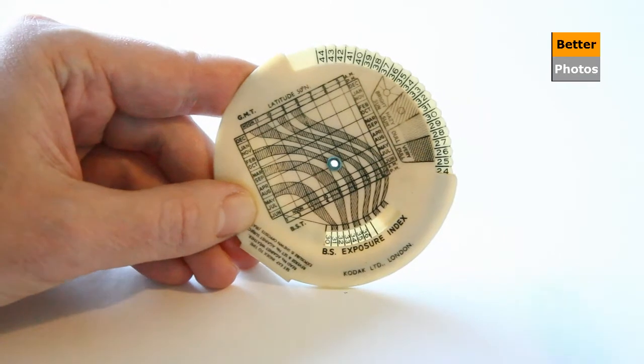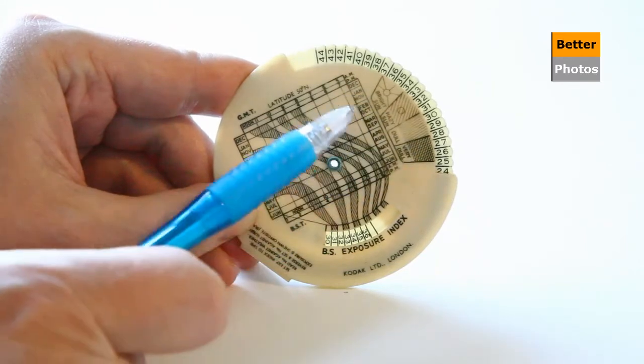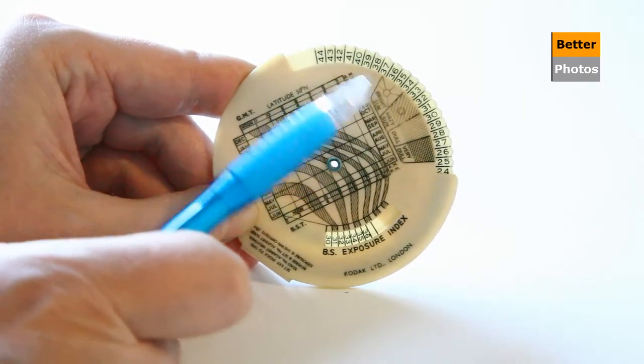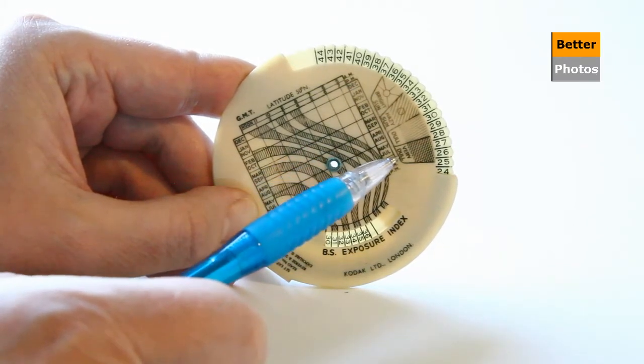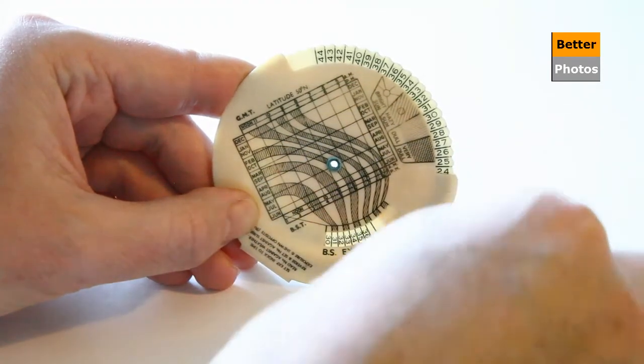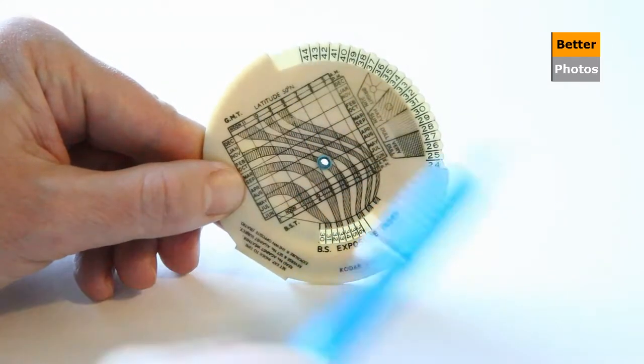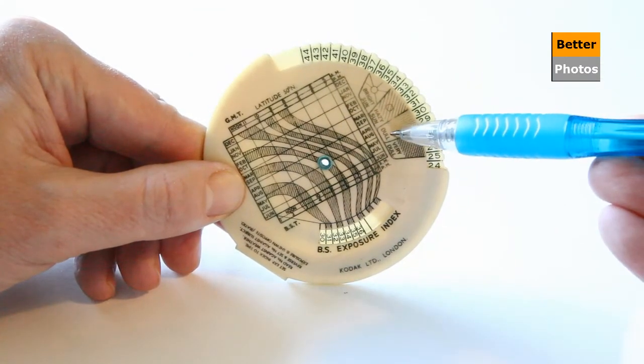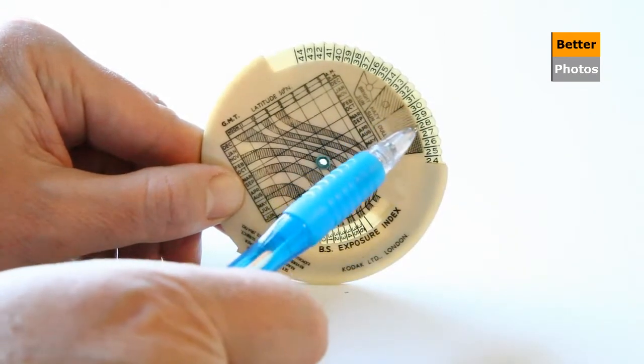And the next step is we need to look at the kind of lighting conditions that we're shooting in so we then move over to this section here. So if we were shooting on a bright sunny day we use this section, a hazy day that section, a dull day that one, and a very dull one that one. So the next step is to then look at the particular kind of conditions we're shooting in and then use these numbers here.